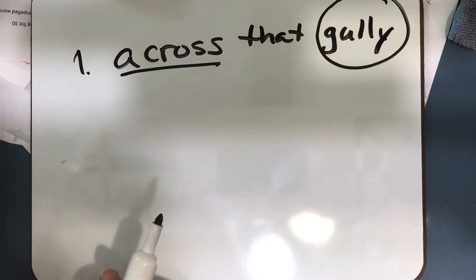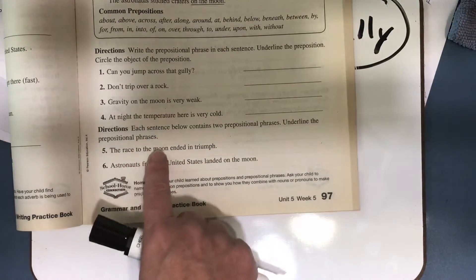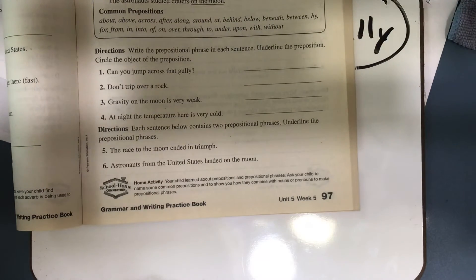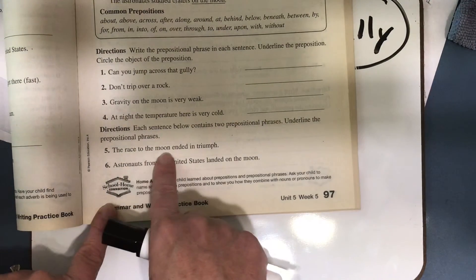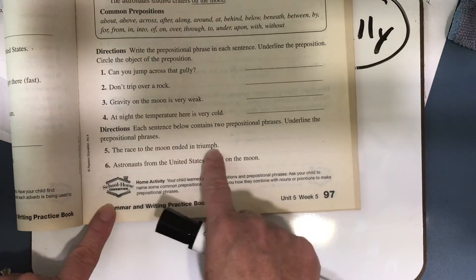Okay, and then the bottom part says each sentence below contains two prepositional phrases. Underline the prepositional phrases. So there will be two in each sentence. Number five says, the race to the moon ended in triumph. Well, your first one is to the moon. So we're going to the moon, and the second prepositional phrase is in triumph.